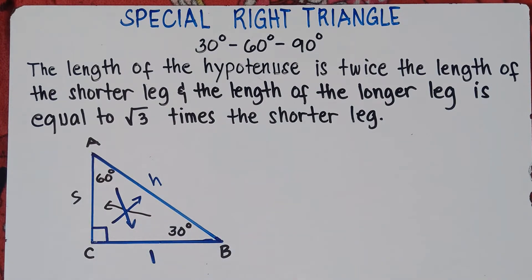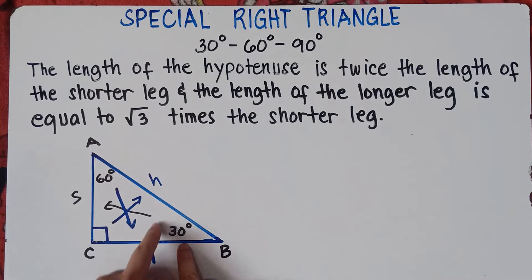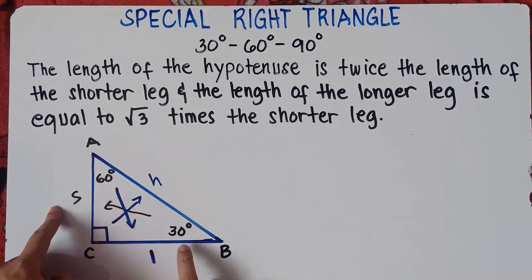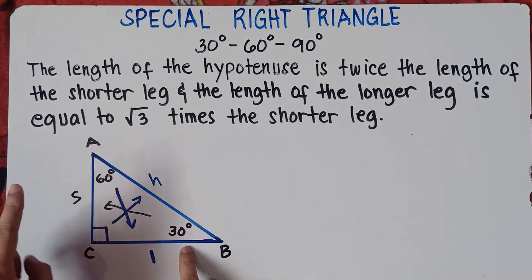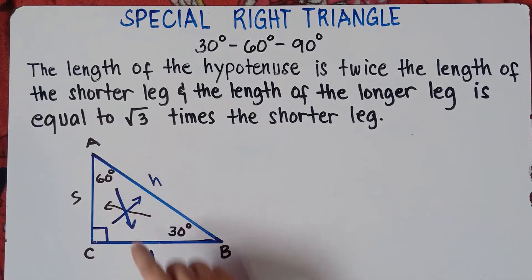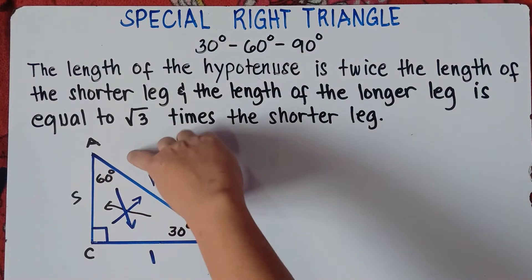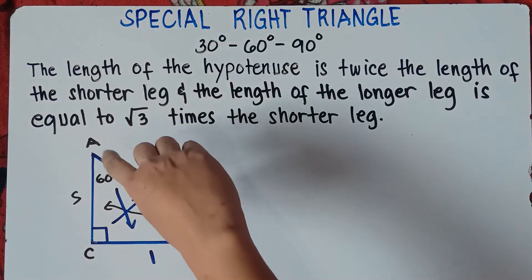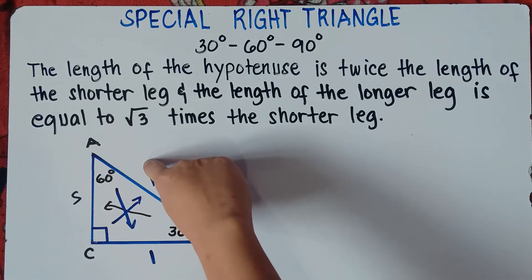Let me repeat it: opposite of the 30-degree angle is the shorter leg; opposite of the 60-degree angle is the longer leg; and the longest side is always the hypotenuse.